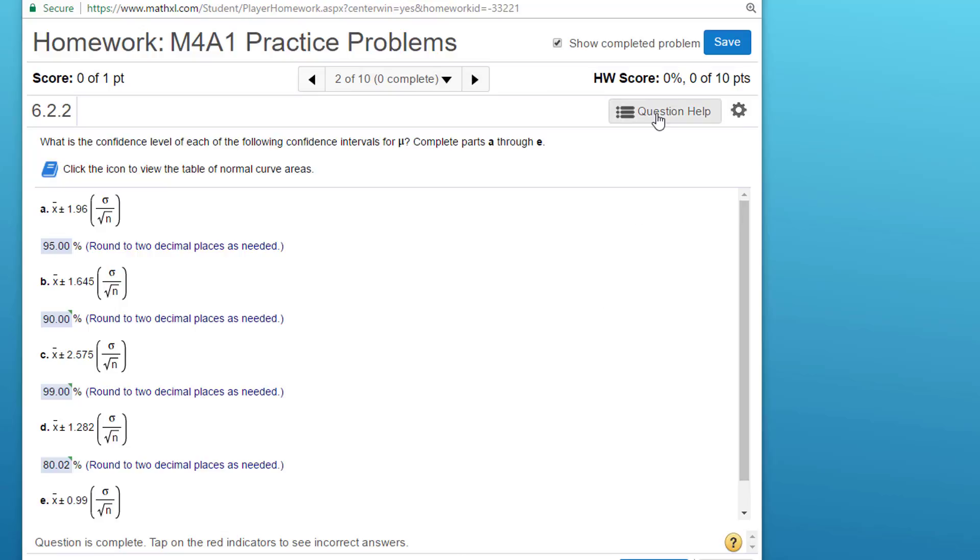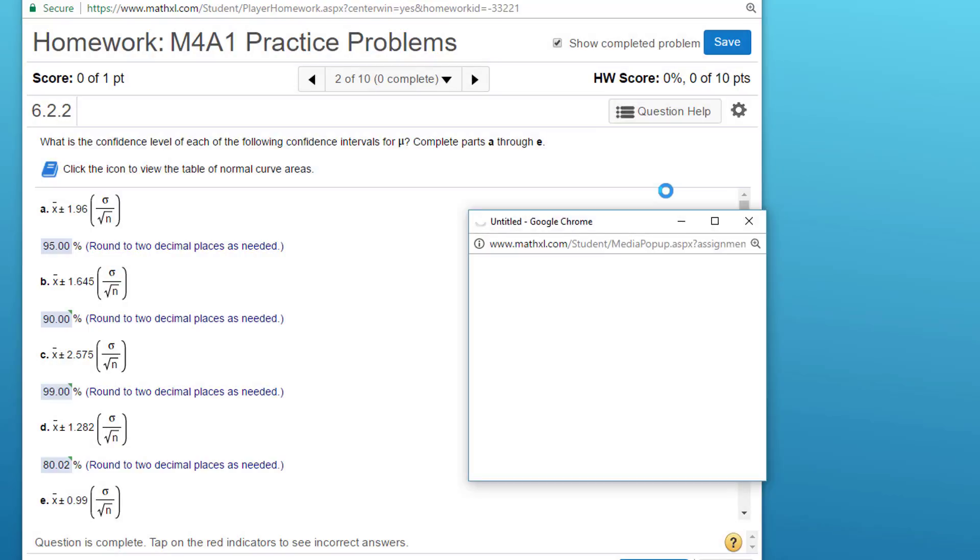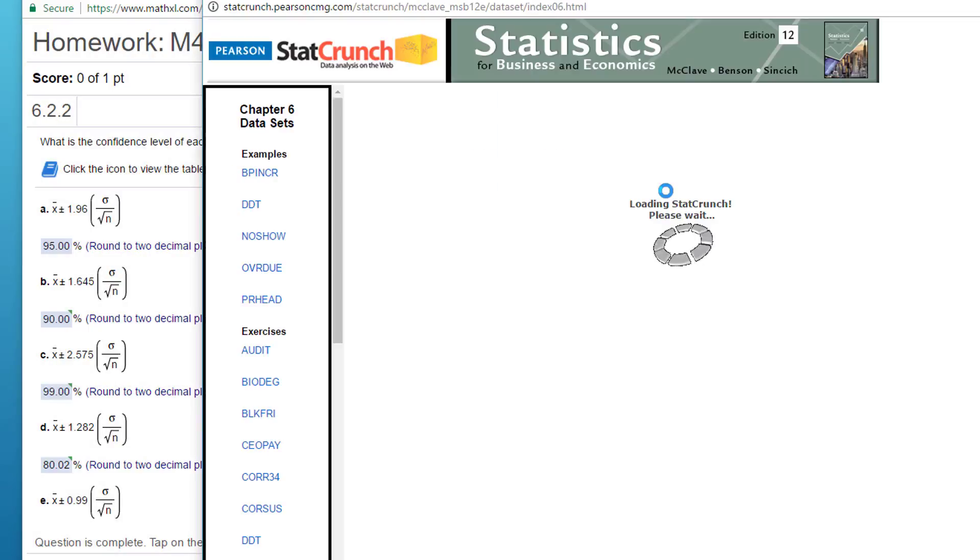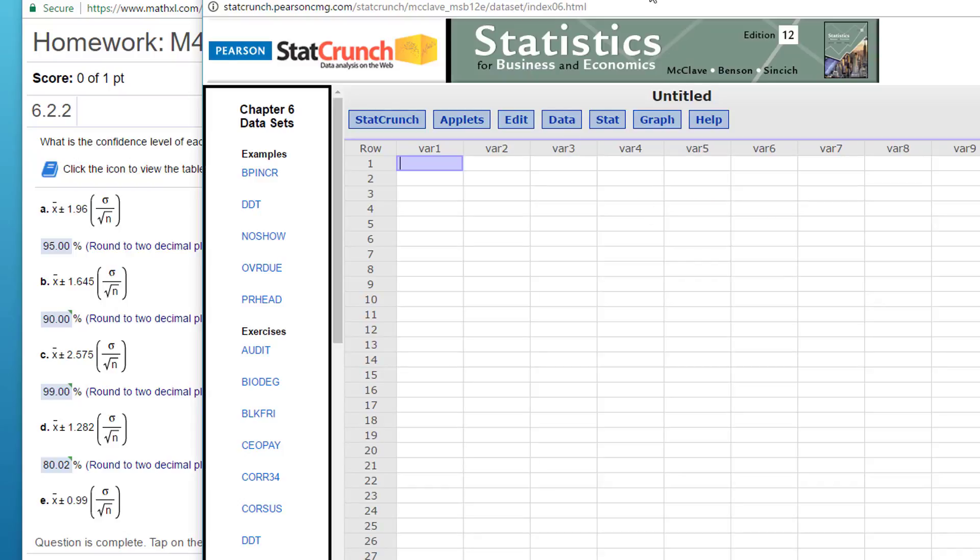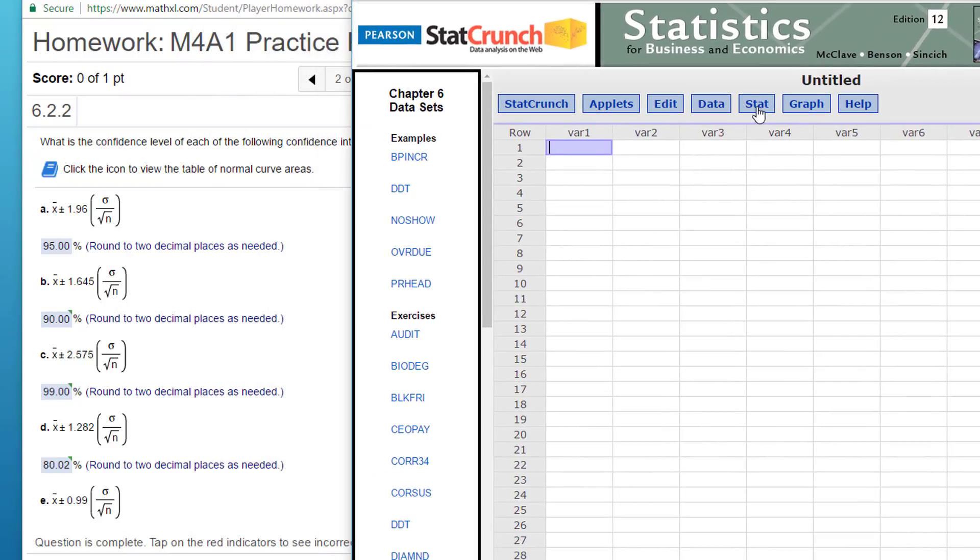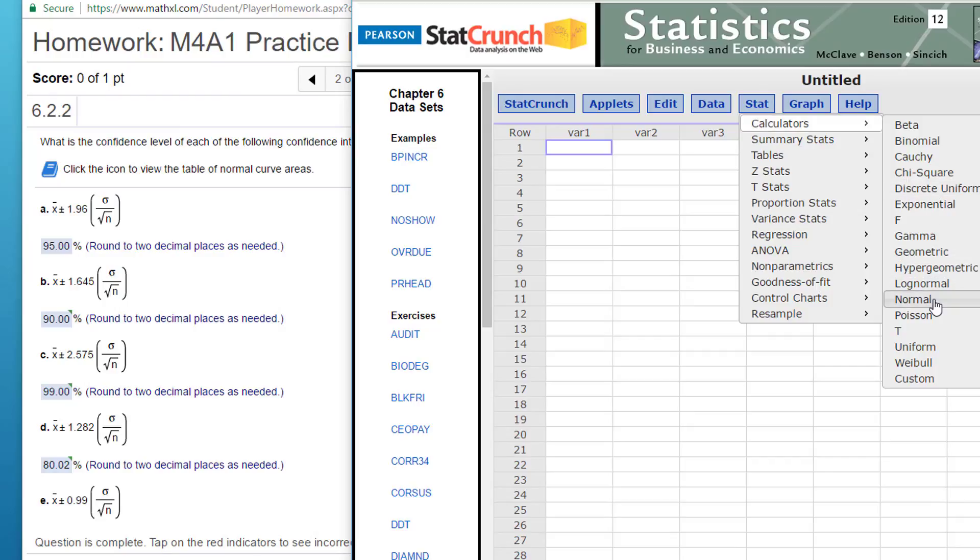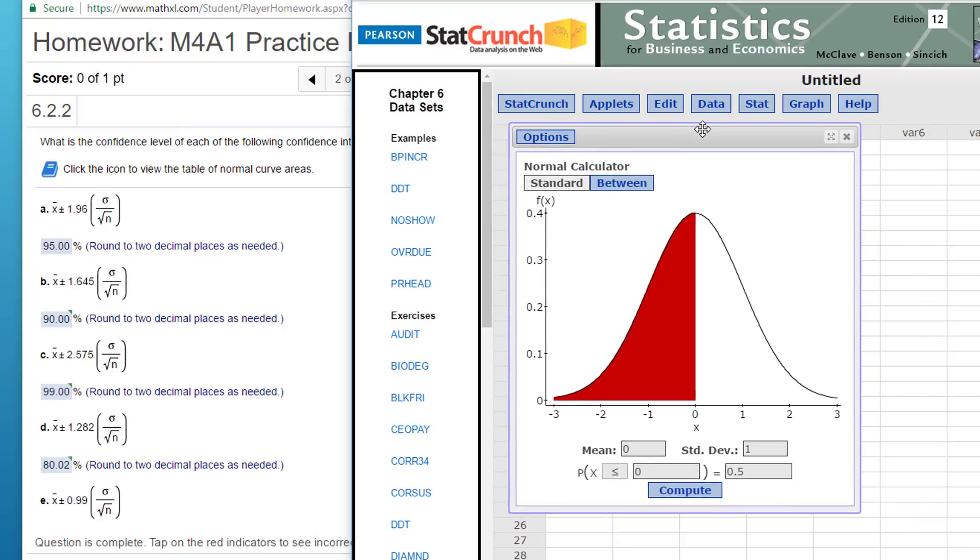All right. So I'm going to call up my StatCrunch again. And we're going to use the stat calculator, normal calculator again. Because we're dealing with confidence intervals, and if you read this, it's x bar plus or minus a value.